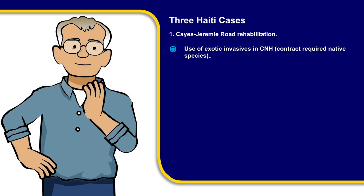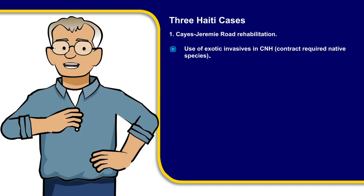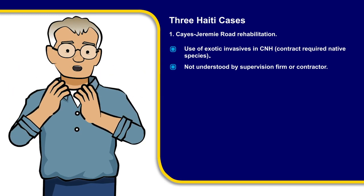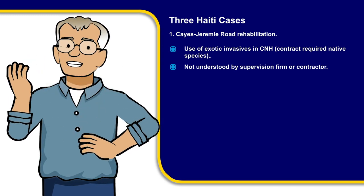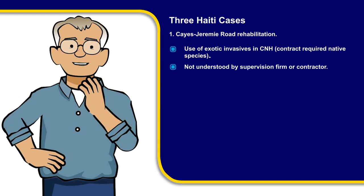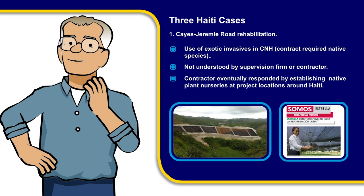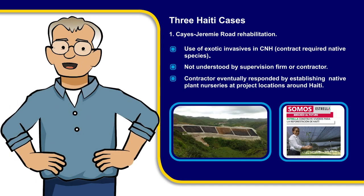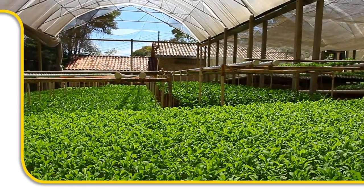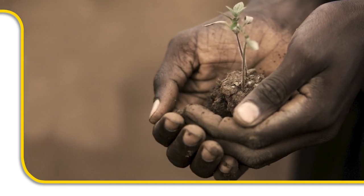This would have meant that while trying to mitigate environmental damage and restore habitats, more impact would have been created. Neither the contracting firm, the project staff, the government supervisors, nor the supervision firm understood the concept of native species, believing that exotic species, as they were already present in Haiti, were therefore native. Once the concept was understood, the contractor realized the importance of their role and established native plant nurseries for this and other projects around Haiti. Establishing native plant nurseries in advance of construction operations will ensure their availability when the time comes to restore natural habitats.